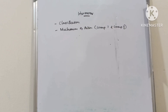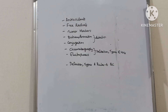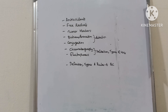Hormones: classification of hormones, mechanism of action of group 1 and group 2 hormones. Extracellular matrix: collagen, components of extracellular matrix with disease. Other important topics: antioxidants, free radicals, tumor markers, biotransformation, conjugation and detoxification, chromatography and electrophoresis — definition, types and uses, and quality control.